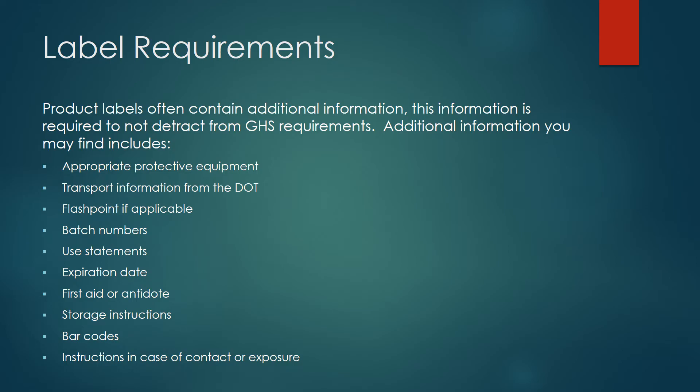Product labels often contain additional information, which is required to not detract from GHS requirements. Additional information you may find includes appropriate protective equipment, transport information from the DOT, flashpoint, batch numbers, use statements, expiration dates, first aid information, storage instructions, barcodes, and instructions in case of contact or exposure.